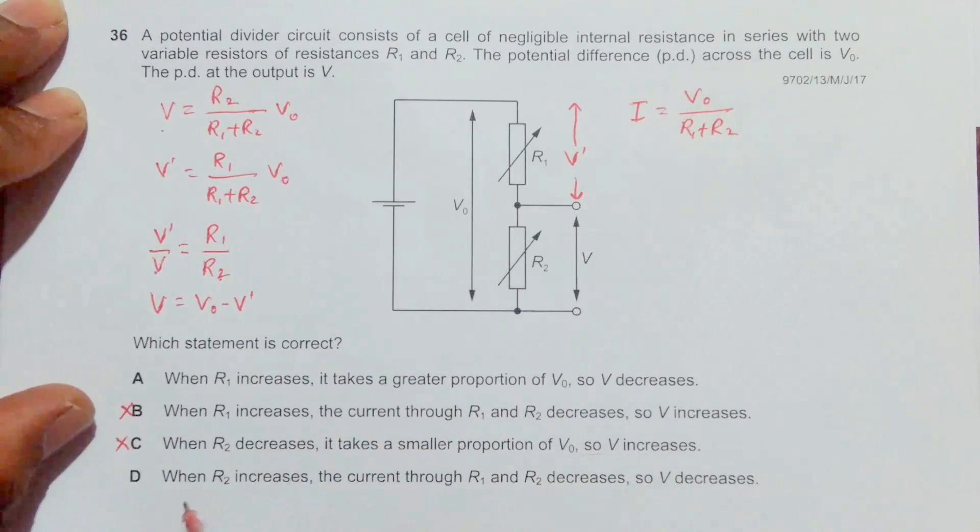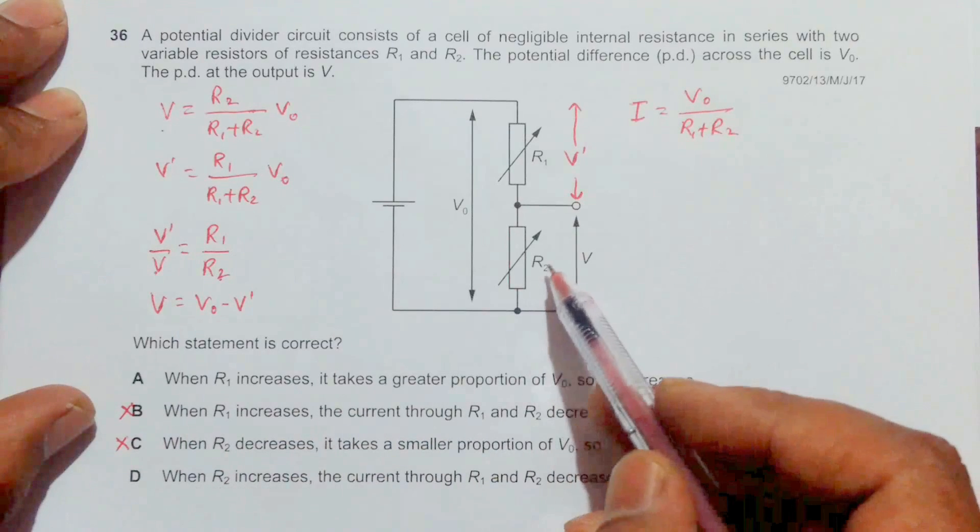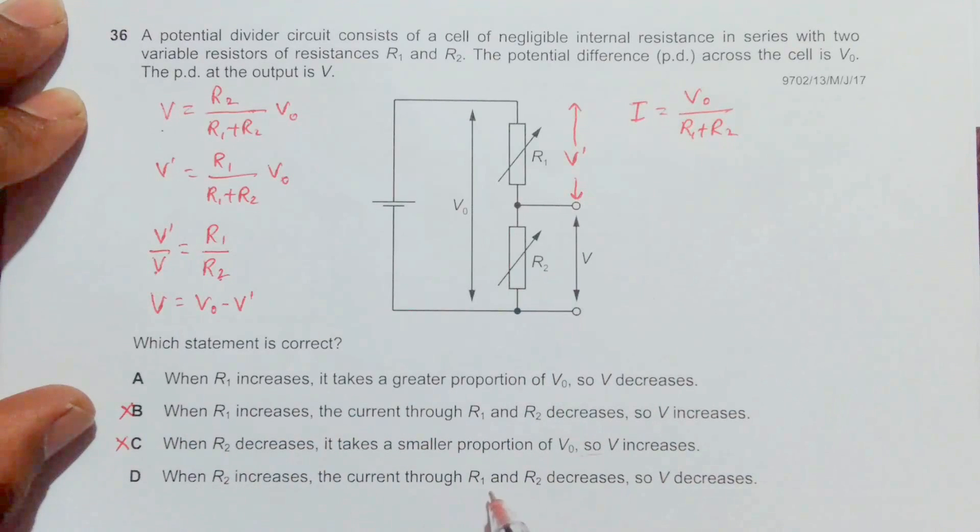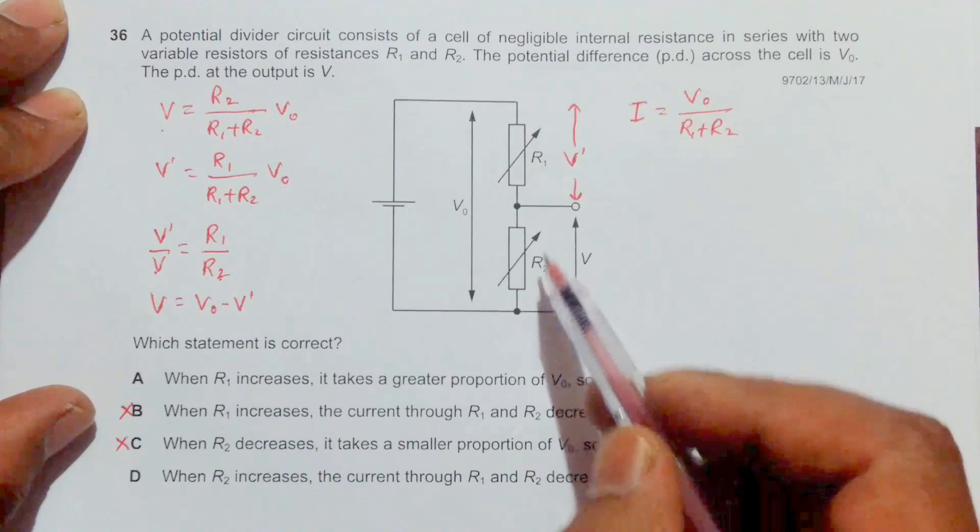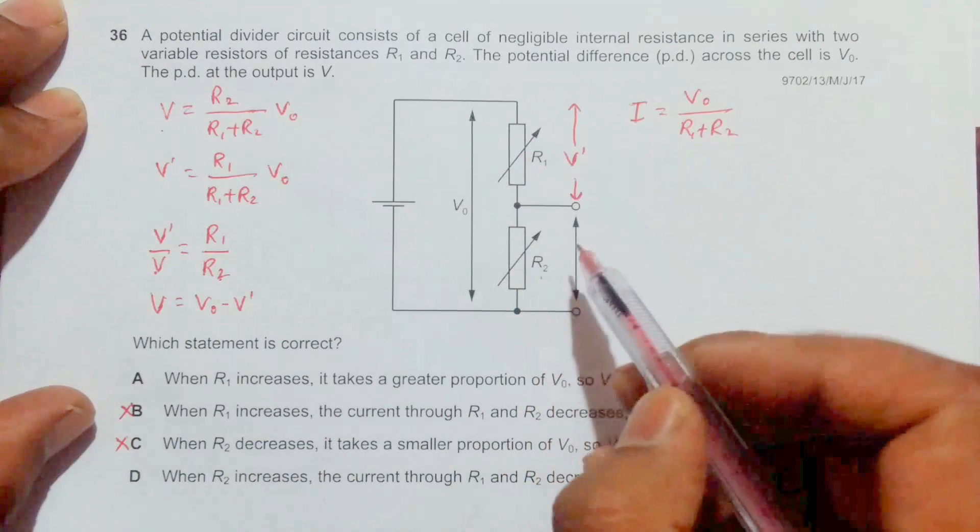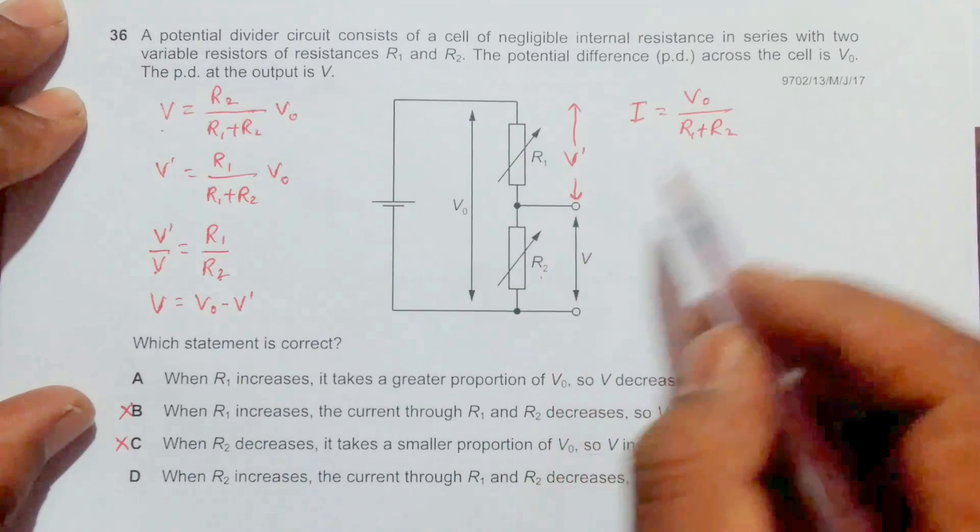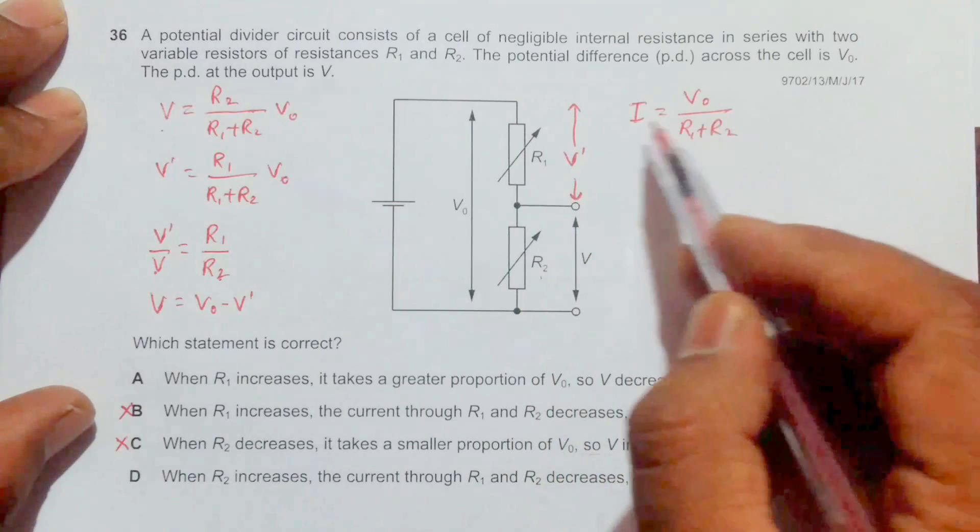Choice D: when R2 decreases, the current through R1 and R2 decreases. That's not true, because if R2 decreases, the overall resistance will decrease and current should increase. This statement is also wrong.